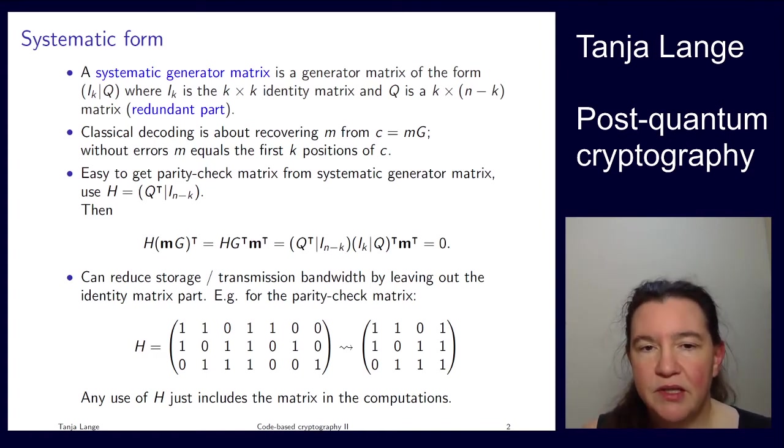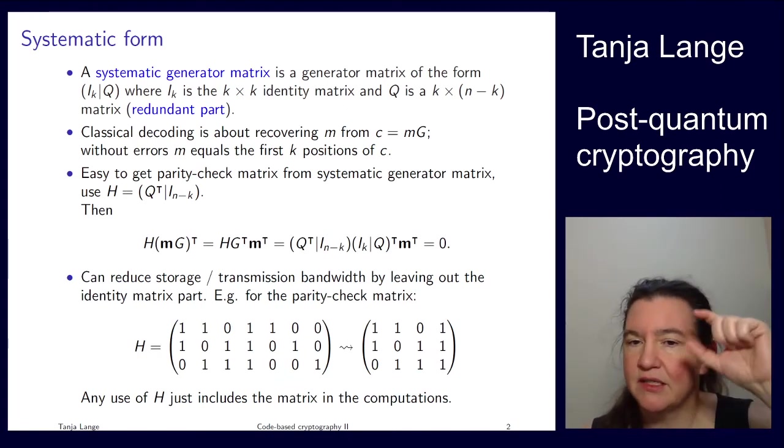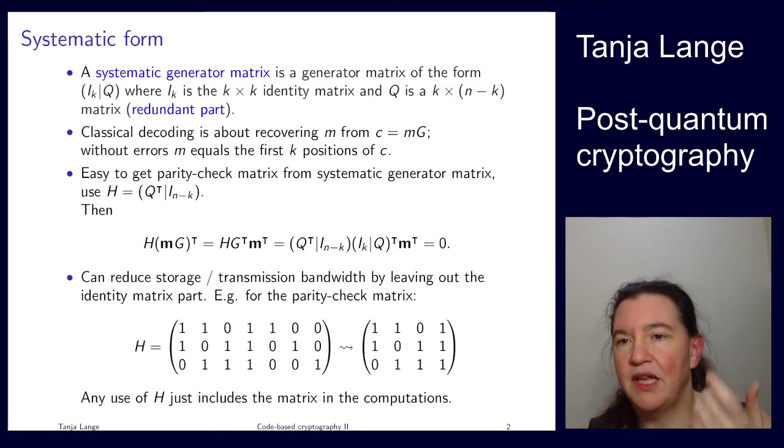If you have to transmit this H, or if you store it, then it is also nice that you can actually kind of forget about the identity part. Everybody knows that the last n minus k by n minus k positions are the identity matrix, so you don't have to store it. So for instance, for the parity check matrix of the Hamming code we saw in the first lecture, instead of having a 3 by 7 matrix, I can store it as a 3 by 4 matrix. Now anything which actually needs the computation, then I have to remember that there is still this identity matrix at the end. But that is, well, an identity matrix, so it is just copying the positions of the vector when I multiply it.